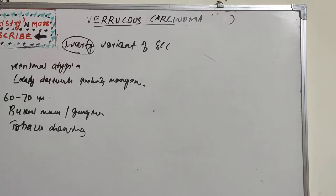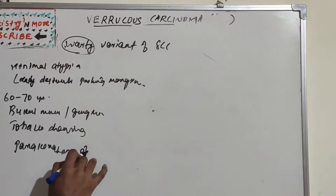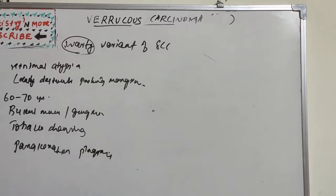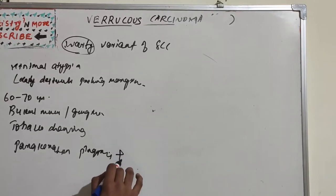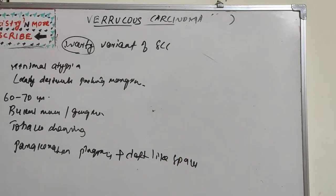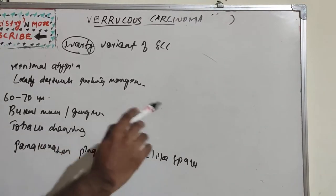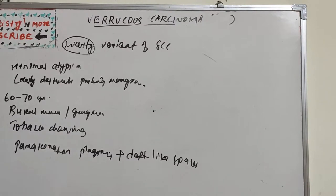There are cleft-like spaces lined by a thick layer of parakeratin, and parakeratin plugging extending into the epithelium. These two features — cleft-like spaces and parakeratin plugging — together constitute the hallmark of verrucous carcinoma. The basement membrane is generally intact, and there is usually a heavy inflammatory infiltrate in the connective tissue.